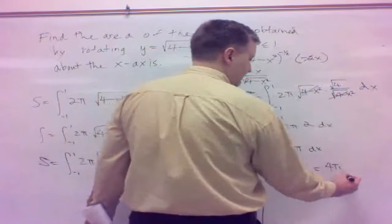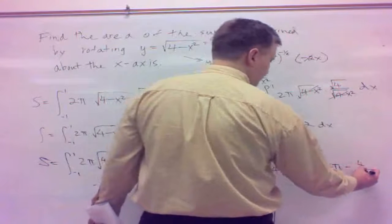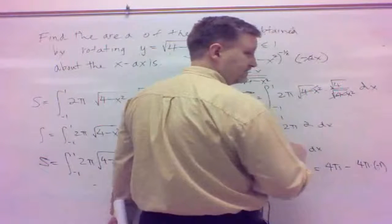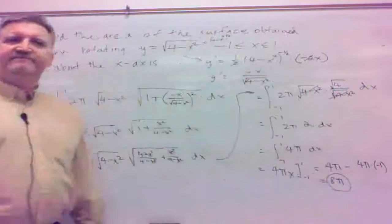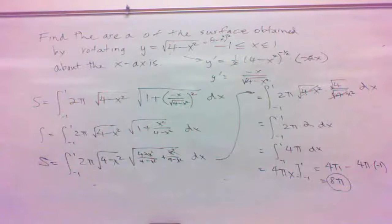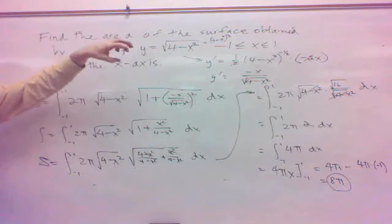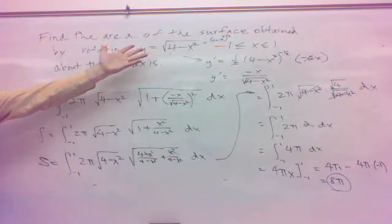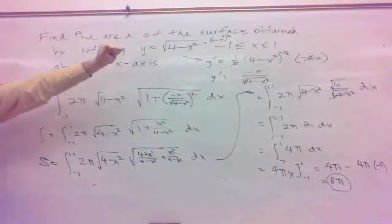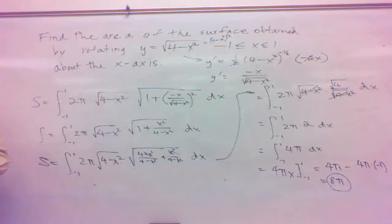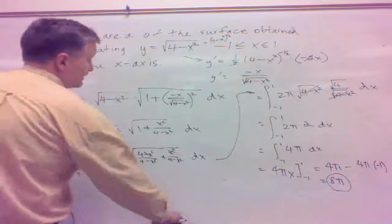So I want to run that from negative 1 to positive 1, so that would be 4 pi times 1 is 4 minus 4 pi times negative 1. Negative, negative, positive, so it's 4 pi plus 4 pi, isn't it? 8 pi. Which, again, you can check this one because that is semicircle rotated about the x-axis. That's a sphere. Surface area of the sphere is radius 2. Surface area of the sphere is 4 pi r. 4 pi times the radius, the radius here is 2. 4 pi times 2 is 8 pi. So, there you go.